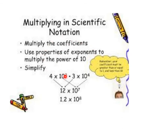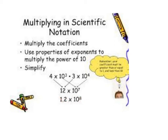When multiplying in scientific notation, it's a bit easier. You multiply the coefficients — the numbers out front — and then use the properties of exponents to add the exponents, since the bases (tens) are the same. For example, 4 times 3 is 12, and 3 plus 4 is 7. Then make sure the final answer is in scientific notation. Since 12 doesn't fit between 1 and 10, move the decimal, making the number smaller and the exponent bigger.